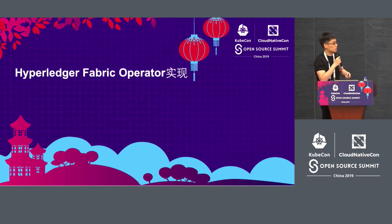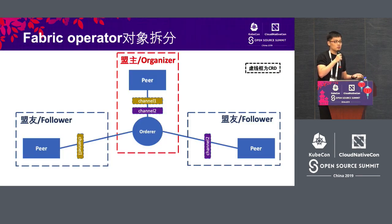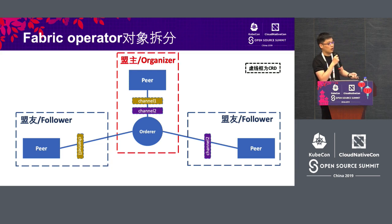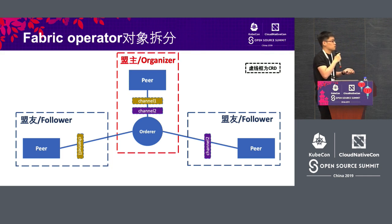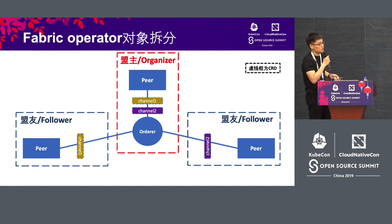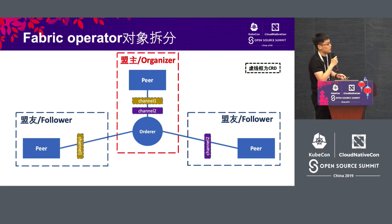How are the Fabric Operators realized? First is the definition of the CRD — the self-defined resource. While thinking about splitting the resources, the starting point is: what resources does the administrator need to manage? During real implementation, there will be an organization which initiates the establishment of a consortium, and this organizer will have different followers. So the organizer becomes the orderer. Organizers and followers are different in terms of their architecture.